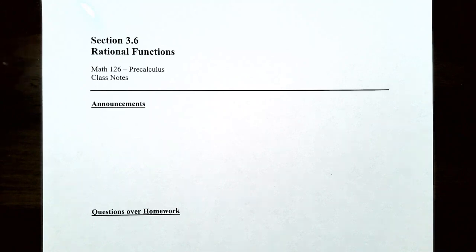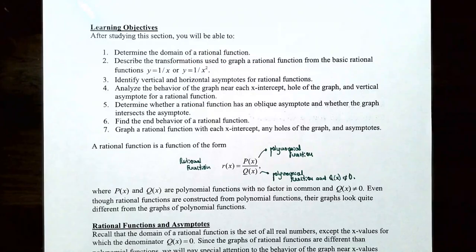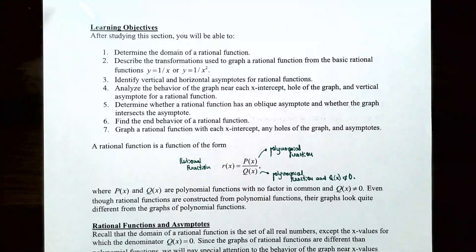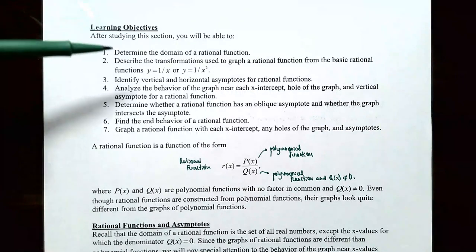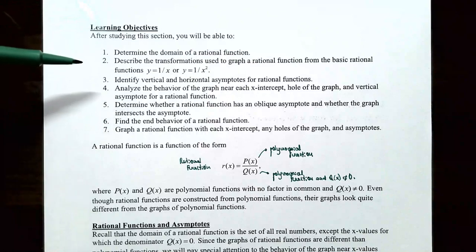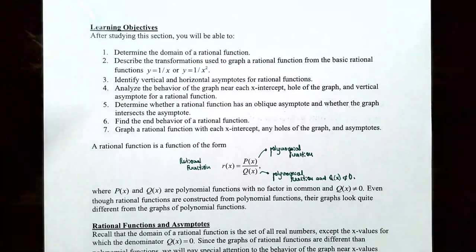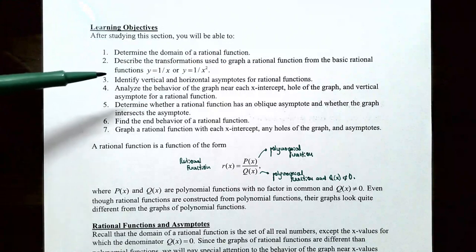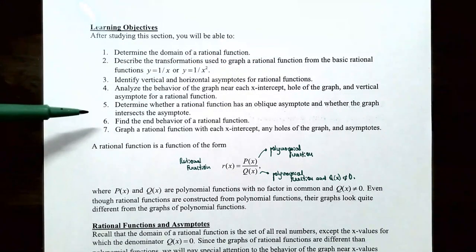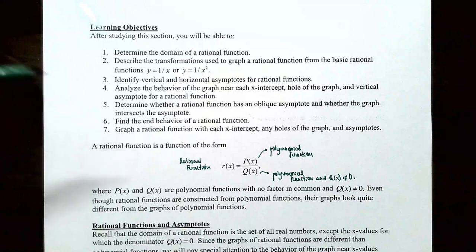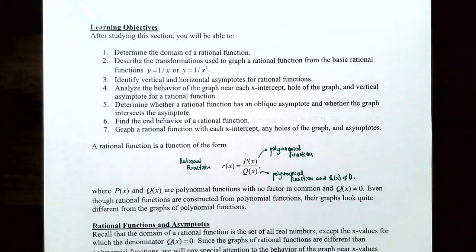Hi everyone, it's Professor Permanent and we're going to finish up our discussion on rational functions. In the last couple videos we talked about how to determine the domain of a rational function, described transformations used to graph from the basic functions y = 1/x or y = 1/x², identified vertical and horizontal asymptotes, determined oblique asymptotes, and found the end behavior of a rational function.